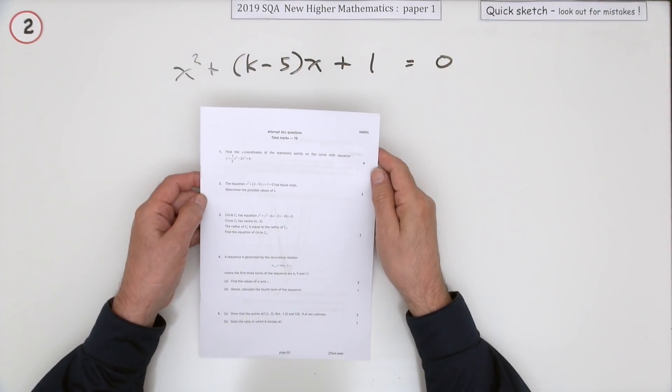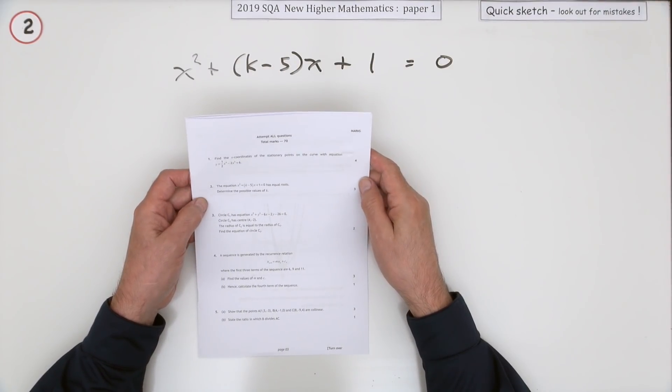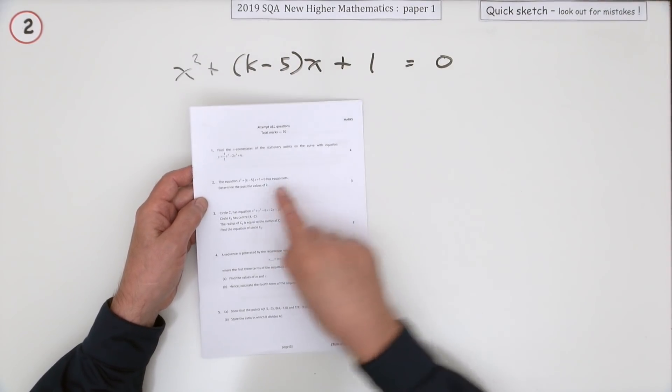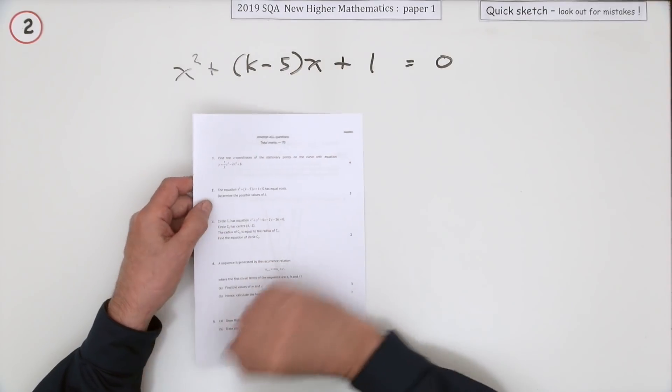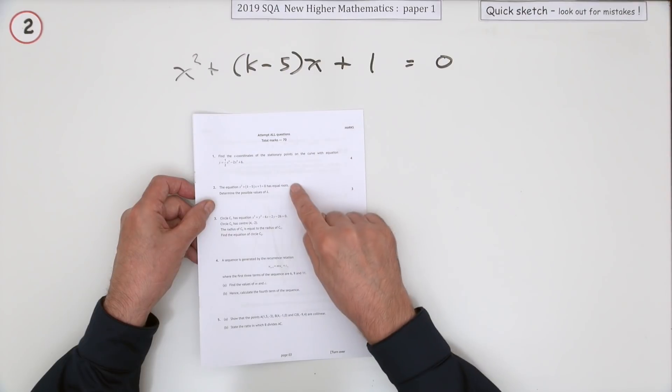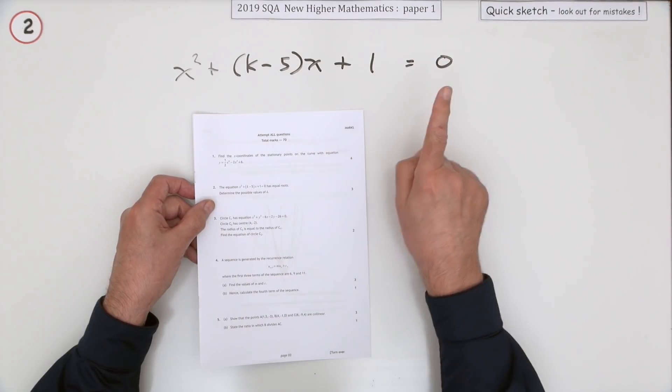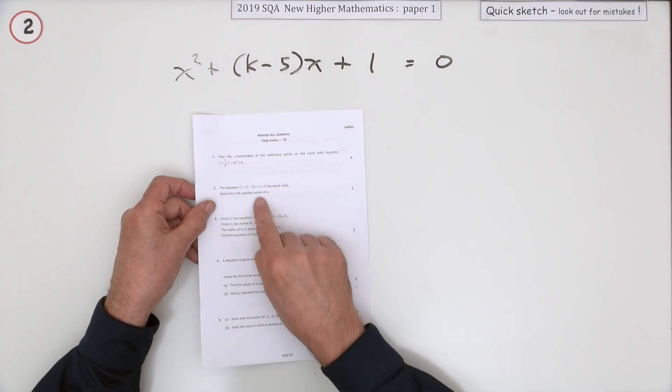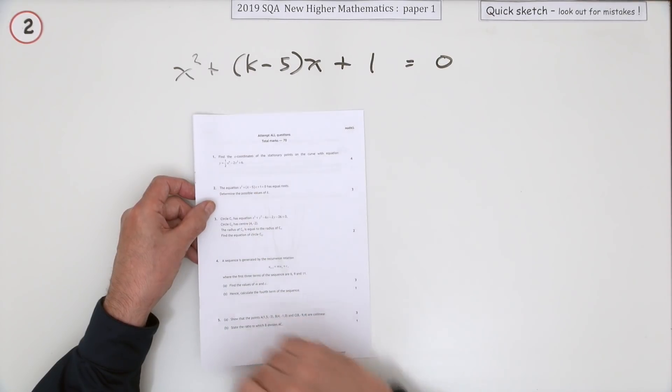Number two then, from the 2019 SQA Higher Maths Paper 1. Three marks here for roots of a quadratic equation. This quadratic equation has to have equal roots. If that's the case, what are the possible values, plural, of k?